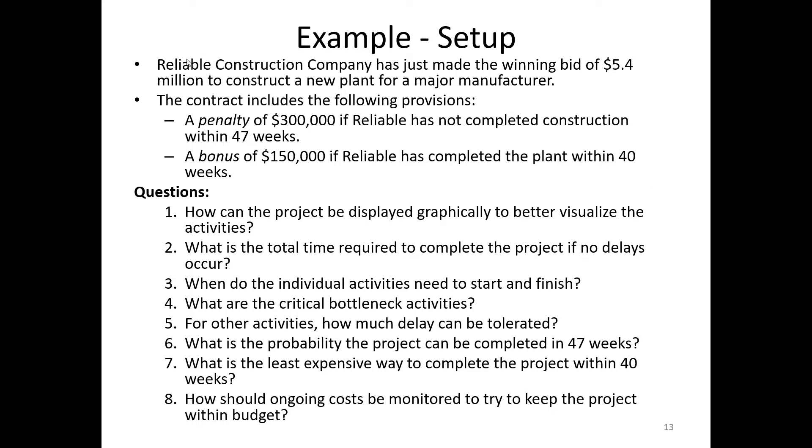So the setup is we have the Reliable Construction Company. They've just made a winning bid of $5.4 million to construct a new plant for a major manufacturer. The contract includes the following provisions: a penalty of $300,000 if Reliable has not completed construction within 47 weeks. Clearly, we need to get this done within 47 weeks. A bonus of $150,000 if Reliable has completed the plant within 40 weeks.